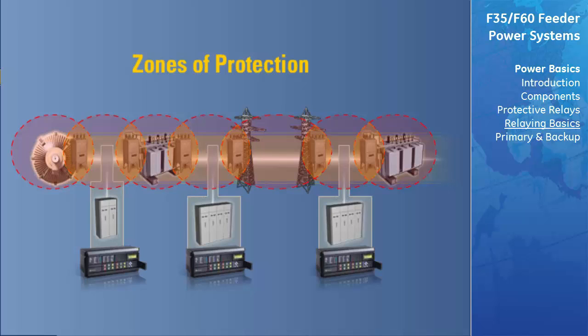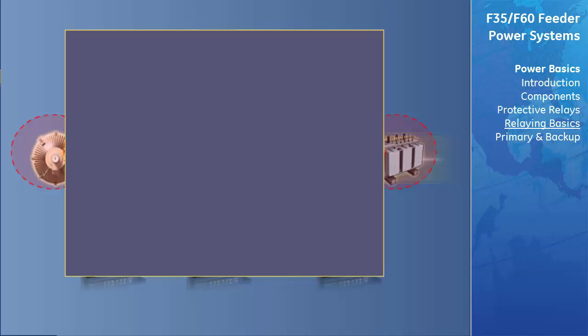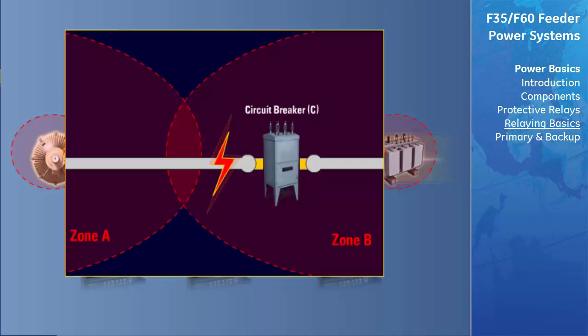The preferred practice is that adjacent protective zones overlap around the circuit breaker so that for failures anywhere other than in the region of overlap, the minimum number of circuit breakers will be tripped. If zones are set up such that overlap occurs on only one side of the breaker, the relaying equipment of the overlapping zone must also be able to trip breakers of the neighboring zone. For a fault located as shown, the circuit breakers of zone B will trip, but because the fault is outside zone A, the relaying equipment of zone B will need to send a trip signal to the breaker in zone A.